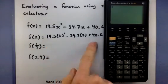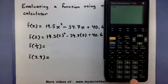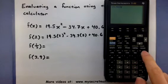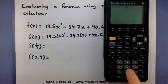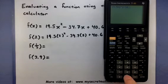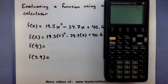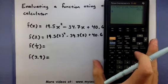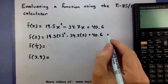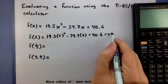You could just type this in as it is and actually get a value. So, 19.5 times 2 squared minus 34.7 times 2 plus 40.6. There we go. So using that way, you do get an answer and it looks like it's about 49.2.